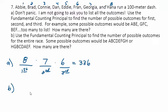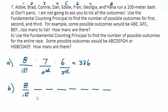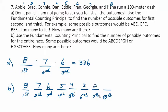For part B, use the fundamental counting principle to find the number of possible outcomes for the entire race. Now we're doing all eight places: first through eighth. For first place there are eight possible people. Then seven for second, six for third, five for fourth, four for fifth, three for sixth, two for seventh, and one for eighth. We multiply all these together.